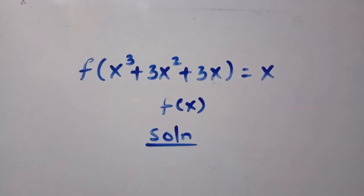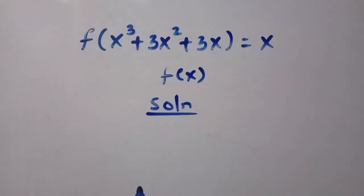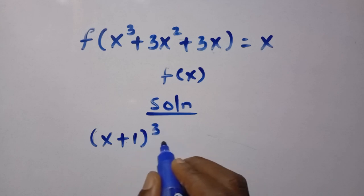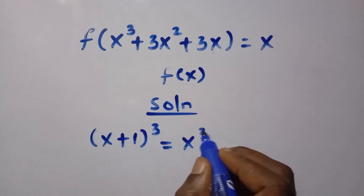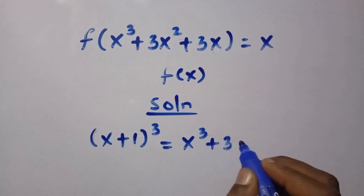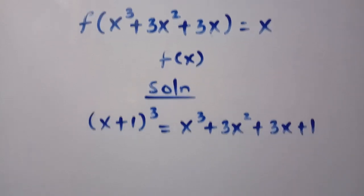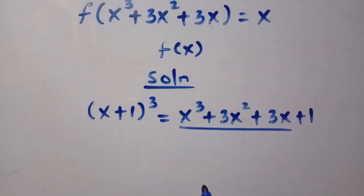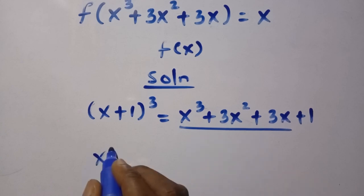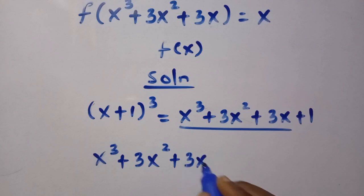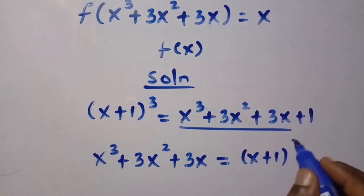Let's see the solution. We have a bunch of x terms and we have to reduce this. Suppose we recall the expansion of (x+1)³. When we expand this, we get x³ + 3x² + 3x + 1. This is what we get when we expand. We can see this expression is already the domain in our given function. Making it the subject of the formula, we have x³ + 3x² + 3x equals (x+1)³ minus 1.